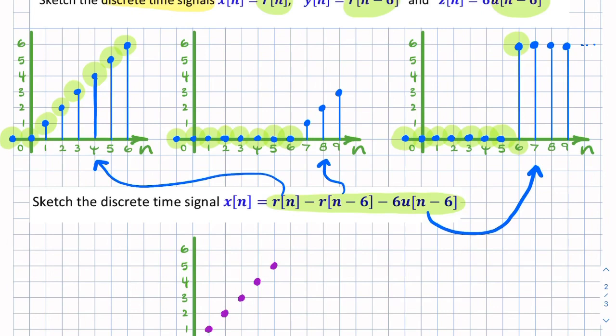Now the next sample would be seven, wouldn't it? So we'd have seven, minus one, is six, minus six, is zero. And then you'd have eight, minus two, minus six, is zero again.